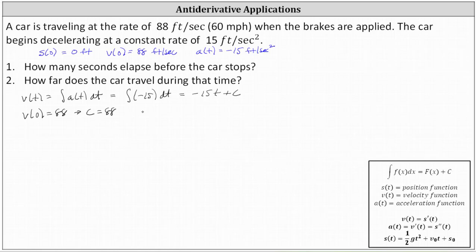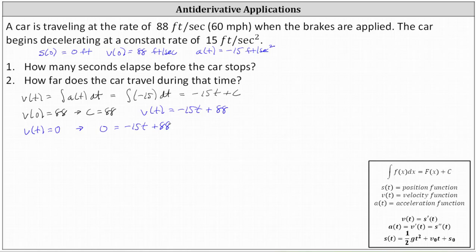So the particular velocity function is v of t equals negative 15t plus 88. Now we can answer the question — how many seconds elapsed before the car stops — by setting v of t equal to zero. The car stops when the velocity equals zero, which gives us the equation: zero equals negative 15t plus 88. To solve for t, we subtract 88 on both sides and divide both sides by negative 15, which gives us t equals negative 88 divided by negative 15, which is approximately 5.87 seconds. So the car stops after approximately 5.87 seconds.